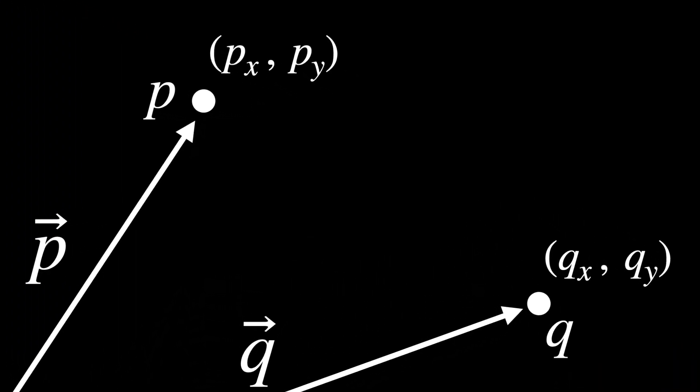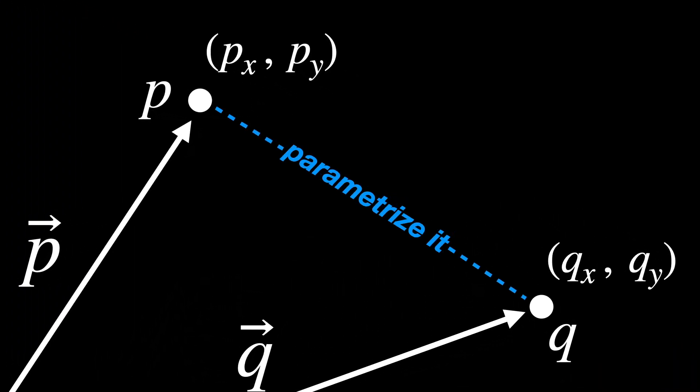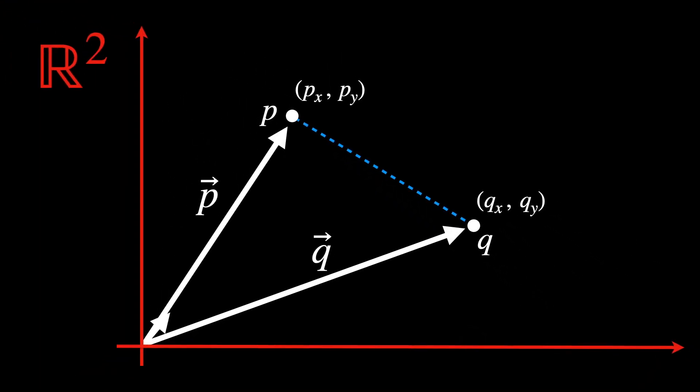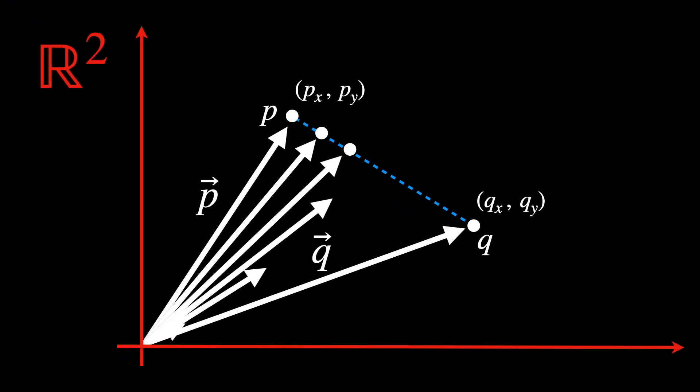The origin serves as a common reference point for all the vectors in the space. By starting every vector at the origin, we establish a uniform way to describe locations in the space. Now, in order to find the line itself, we have to parametrize it. Which means that we need to describe every point along the line, connecting P and Q, using a single variable that continuously varies over a defined interval.